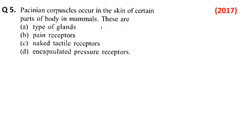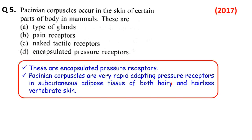Question number 5: Pacinian corpuscles occur in the skin of certain parts of the body in mammals. Pacinian corpuscles क्या है — इसकिन में जो पाई जाती है। These are encapsulated pressure receptors। Pacinian corpuscles are very rapidly adapting pressure receptors in subcutaneous adipose tissue, in both hairy and hairless vertebrate skin। So these are encapsulated pressure receptors। Option D is right here।